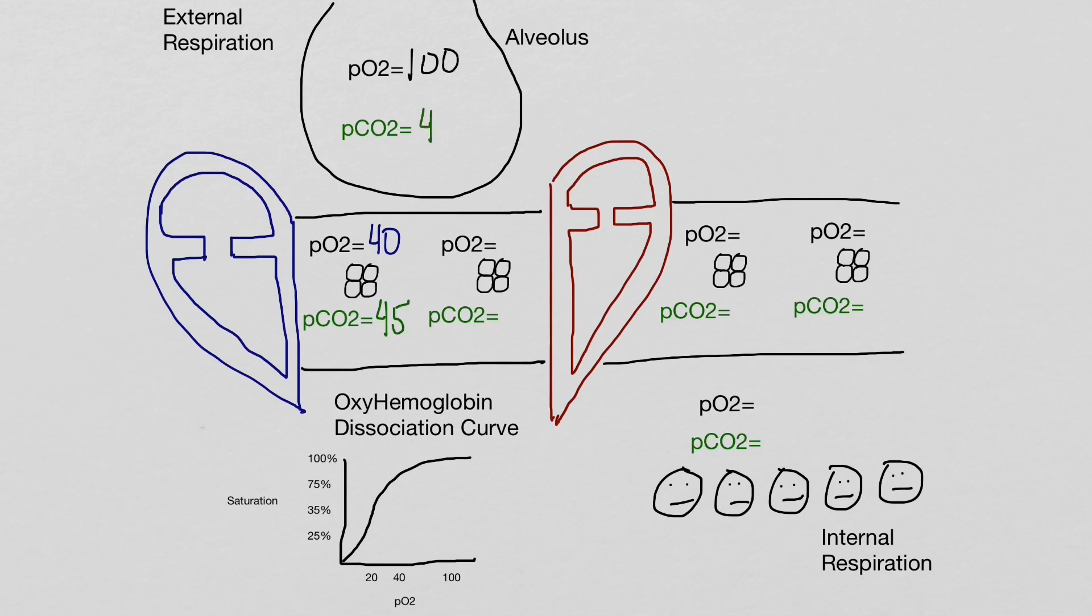Partial pressure of oxygen in the alveoli will be 100, and the partial pressure of carbon dioxide will be 40. Oxygen will move into the blood, and then carbon dioxide will move out into the lung through diffusion. This diffusion will continue until partial pressure of oxygen will be 100 in the blood, and partial pressure of carbon dioxide will be lower at 40.